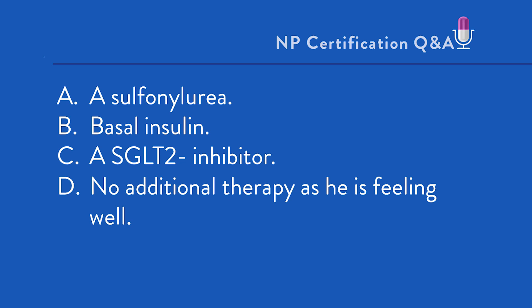Option A: a sulfonylurea. This drug class enhances insulin release but without regard to blood glucose, making hypoglycemia a major concern. While this is not an incorrect answer, choosing a sulfonylurea fails to address the issues of his comorbidities, especially CKD and obesity. This is the dilemma you'll find on boards — it's a response that's not wrong, but it's not our best response.